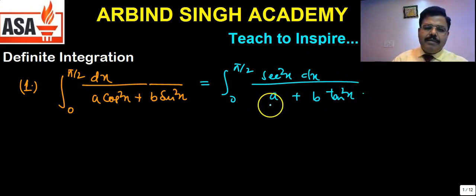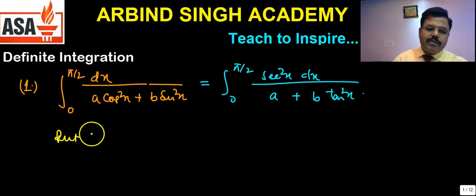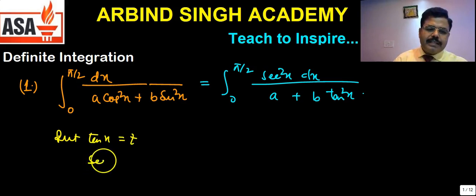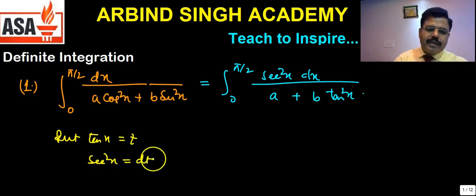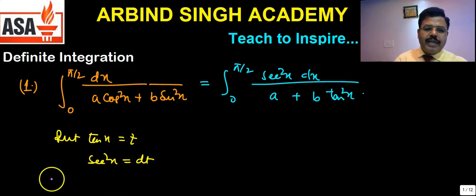Now we put tanx = t, so sec²x·dx = dt. Since we have made a substitution, we also need to change the limits.